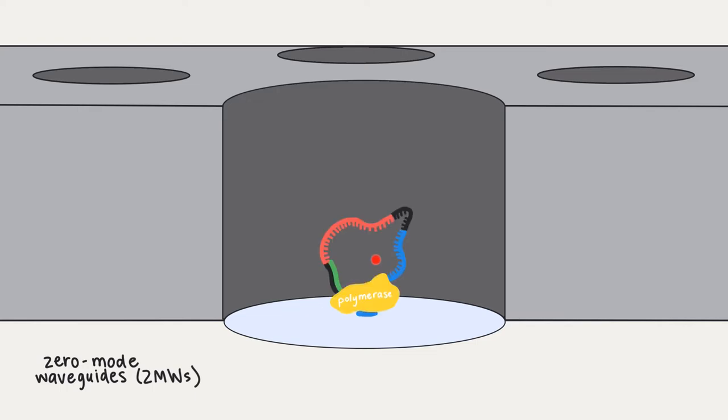A single DNA polymerase attached to a single DNA template is anchored to the bottom glass surface of a ZMW. It's immobilized at the bottom through surface coatings that direct protein attachment to the glass floor.